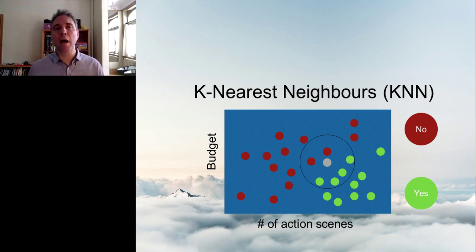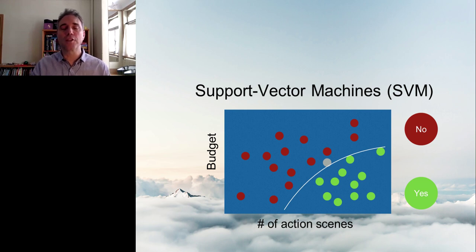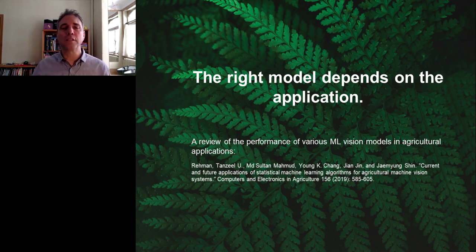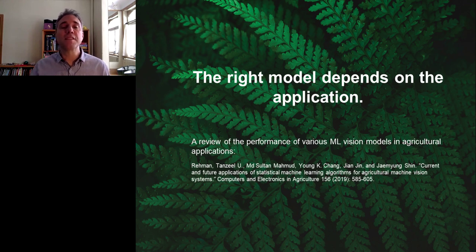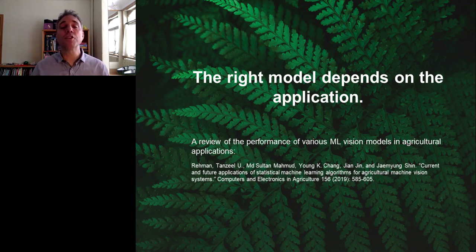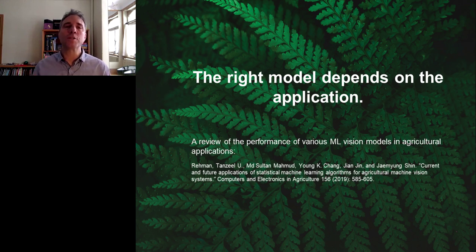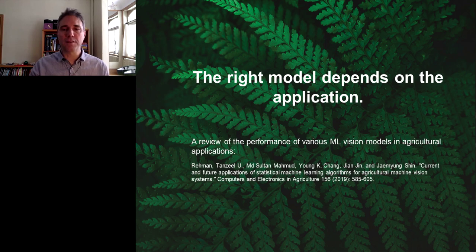There are lots of different models we could use. Another one is support vector machines, where you try to estimate a boundary between the two groups. What distinguishes these models is their relative performance, and that performance is going to vary depending on the application. In this study, the researchers reviewed a large number of machine learning vision models applied to agriculture applications and used that data to determine which models performed relatively better on which type of agricultural application. I find this study relevant to the cannabis industry, because these applications are obviously going to be very similar.